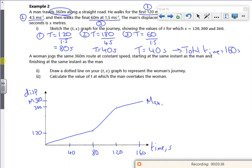Then it says a woman jogs the same 360 meter route at a constant speed. So constant speed is going to be a straight line going up, somewhat like that, and you finish at the same time.